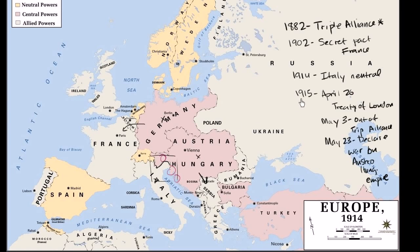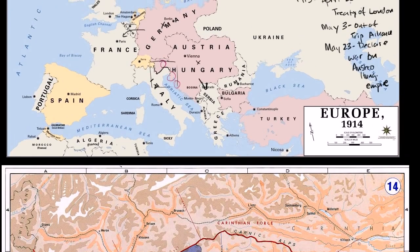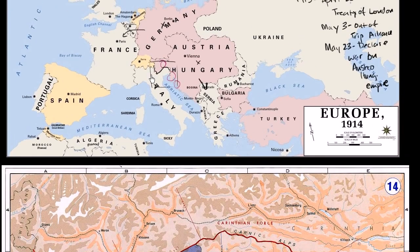In early 1915, in the spring of 1915, Italy signs the secret Treaty of London with the Allies. Then in May, it actually declares war on Austria-Hungary. It actually wouldn't formally declare war on Germany until 1916. And so that lays the setting for the actual combat along the Italian-Austro-Hungarian border.